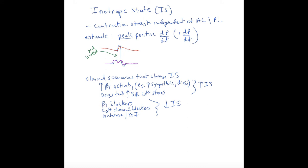On the other side, we can block beta-1 receptors, block calcium entry into the ventricle, which would reduce contractility. Or ischemia or myocardial infarction damage to the ventricle could also cause a reduction in inotropic state.